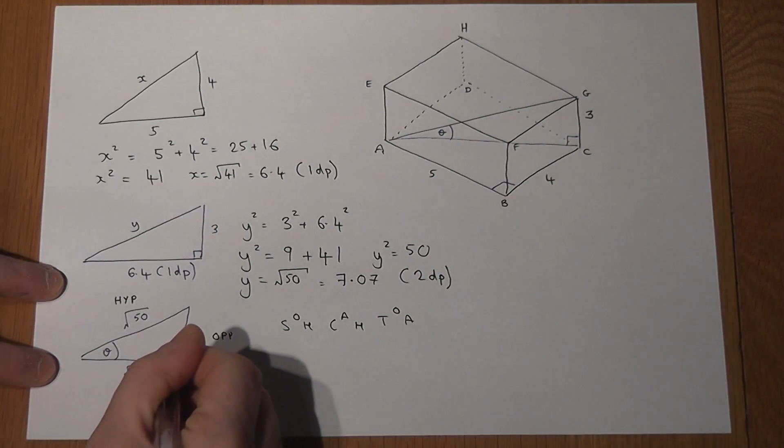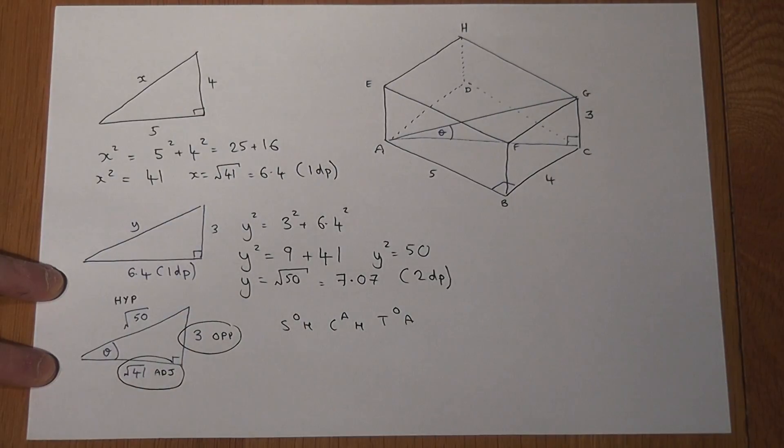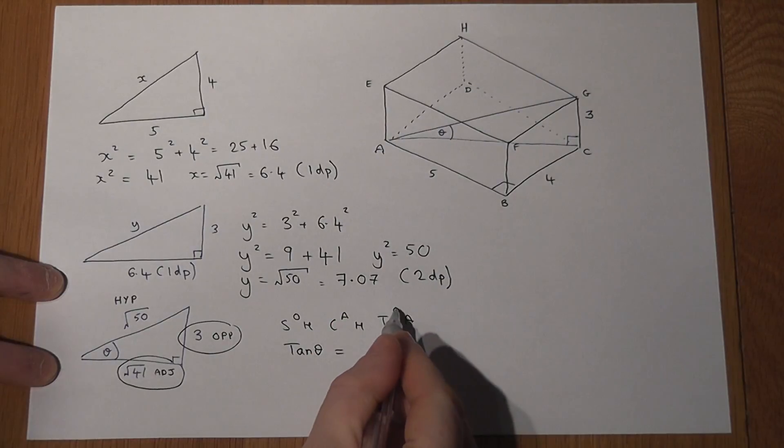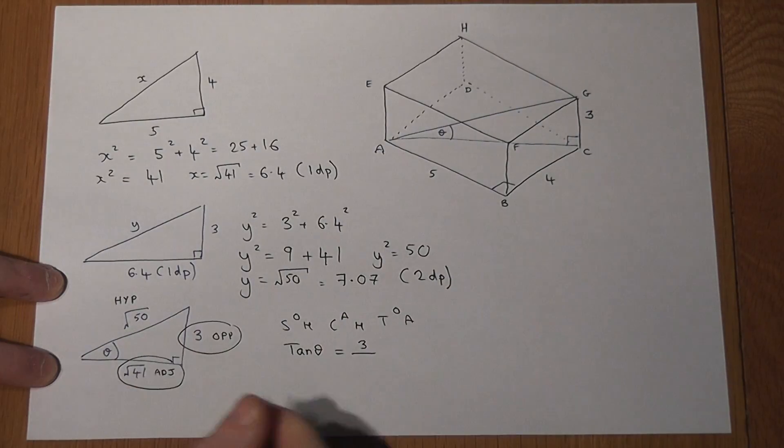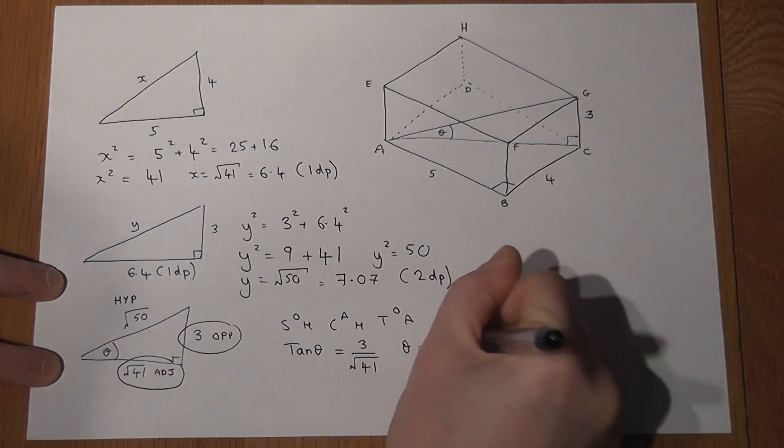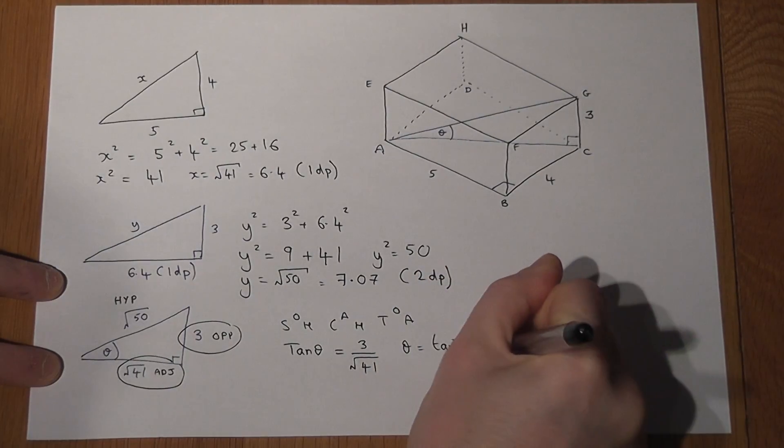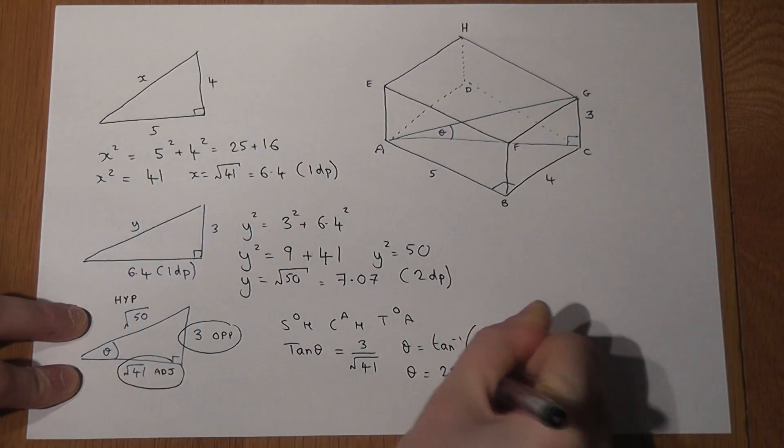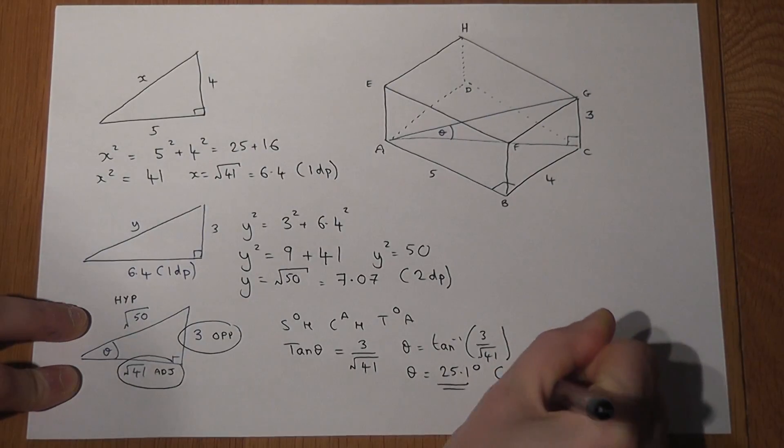I'm going to pick, just for the sake of it, the adjacent and the opposite. Then what SOHCAHTOA tells us is that, because I've picked the O and the A, that tan of the angle equals the opposite, which is 3, over the adjacent, which is root of 41. So to find the angle, I do the inverse tan of 3 over root 41. So I press shift tan on the calculator, enter 3 over root 41. And from this, I get the angle is 25.1 degrees to 1 dp.